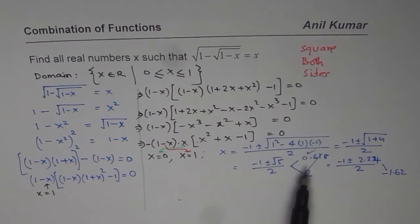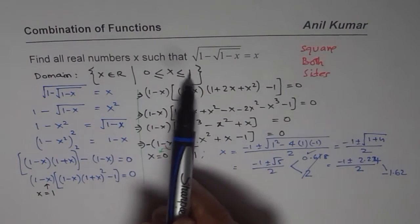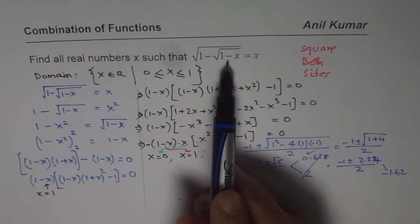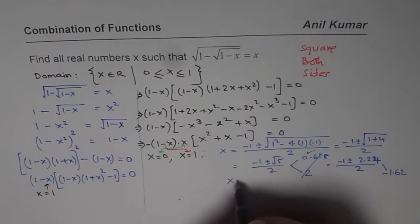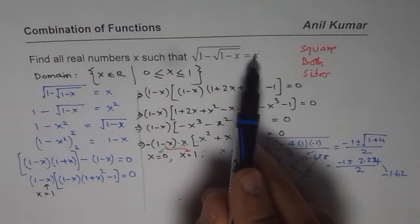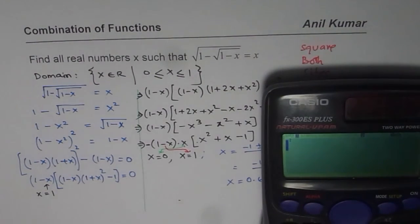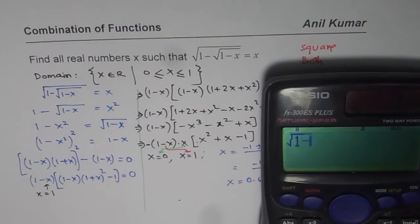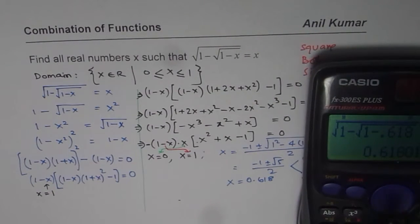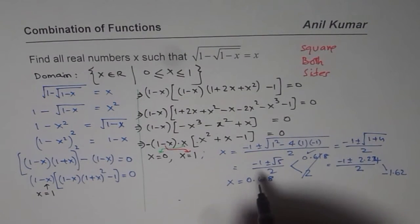Since we know that the domain is between 0 and 1, x equals 0.618 fits in. It's a good idea to verify: substituting into square root of 1 minus square root of 1 minus 0.618 does indeed equal 0.618, so that is a valid solution.